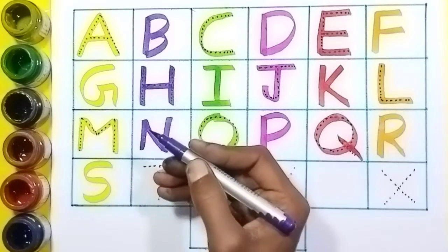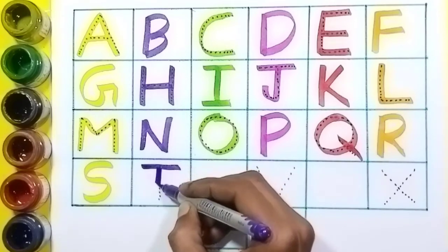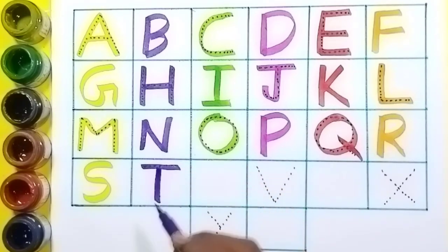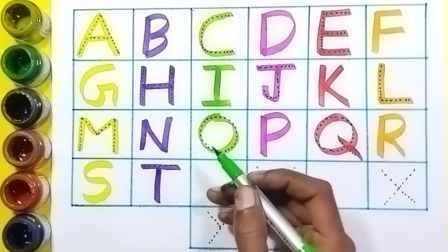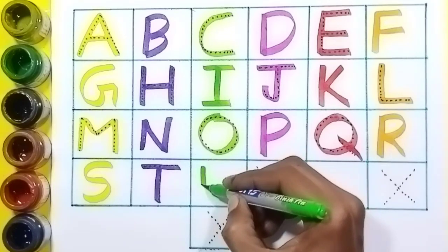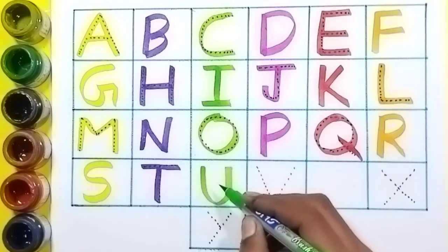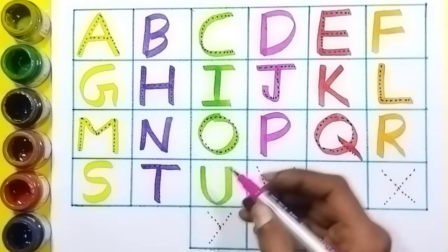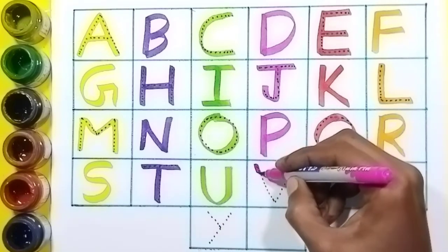S, S for sun, violet color. T, T for tiger, green color. U, U for umbrella.